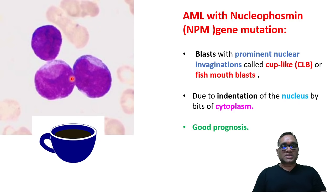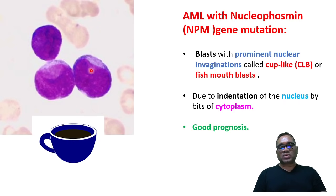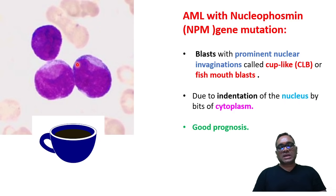So now you can see these are the two blast cells, and if you look at the nucleus you can see there is an invagination of the nucleus. You can notice this invagination because the cytoplasm is putting pressure on the nuclei. This is called a cup-like blast or fish mouth-like blast.